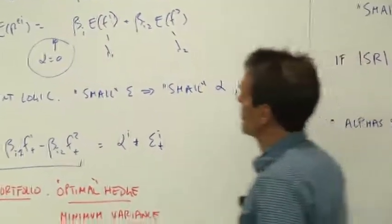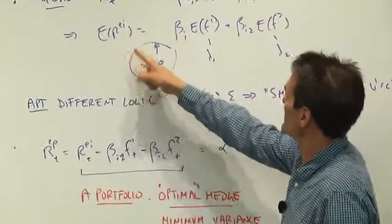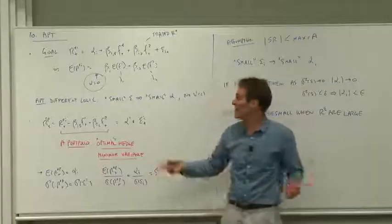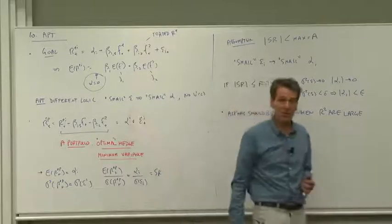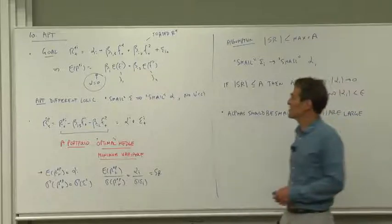And if the alpha is zero, then the expected return is higher where the betas are higher with the expected values of the factors, the slope coefficients. So, again, that's just a factor model.